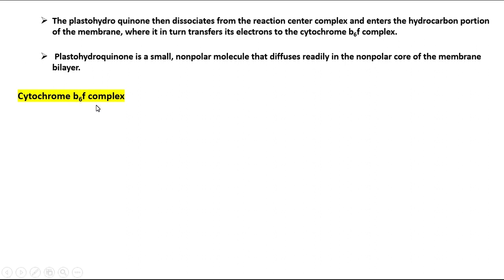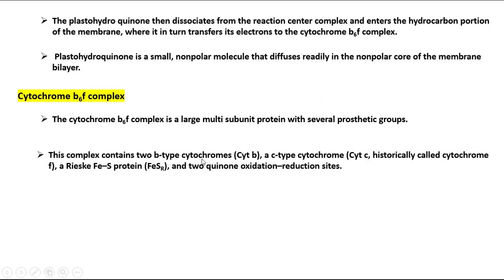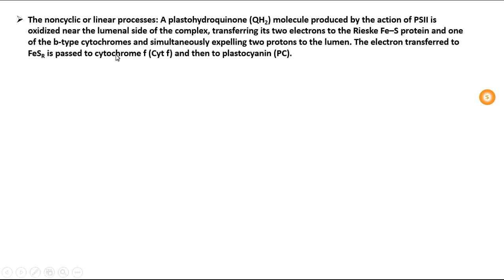The cytochrome B6F complex is a large multi-subunit protein with several prosthetic groups. It contains two B-type cytochromes, a C-type cytochrome historically called cytochrome F, a Rieske iron-sulfur protein (FeS), and two quinone oxidation-reduction sites. In C-type cytochromes, the heme is covalently attached to the peptide; in B-type cytochromes, the protoheme group is not covalently attached. The complex contains a Rieske iron-sulfur protein in which two iron atoms are bridged by two sulfur atoms.